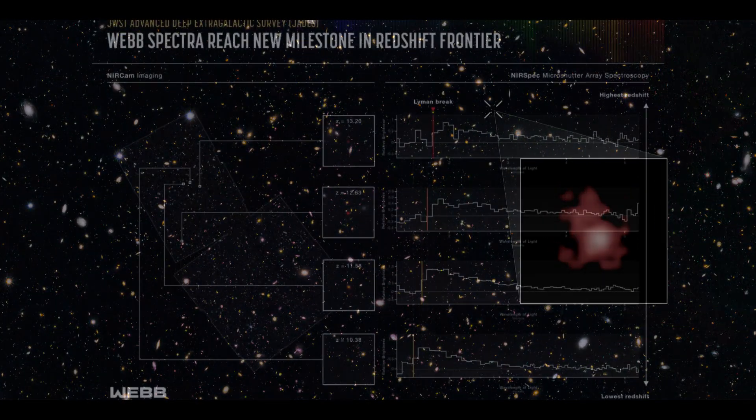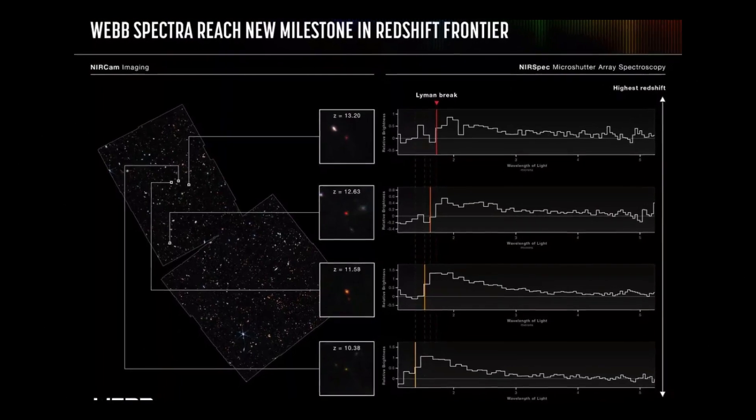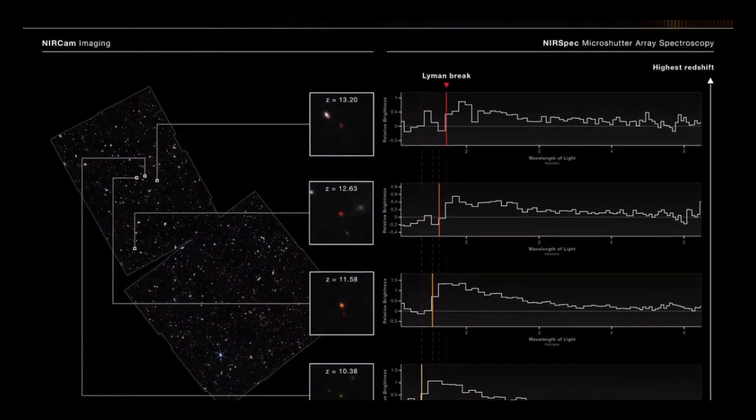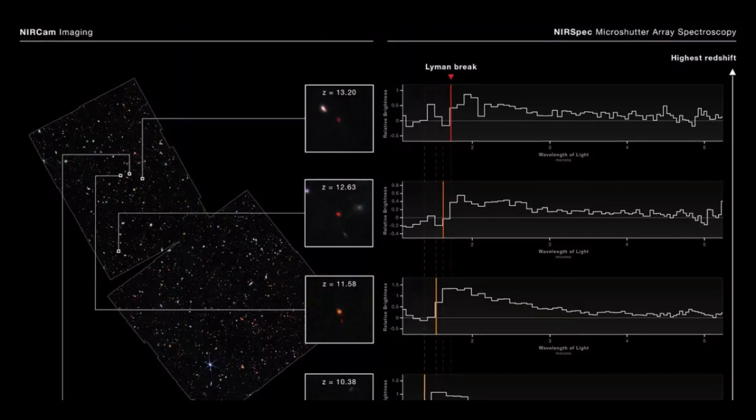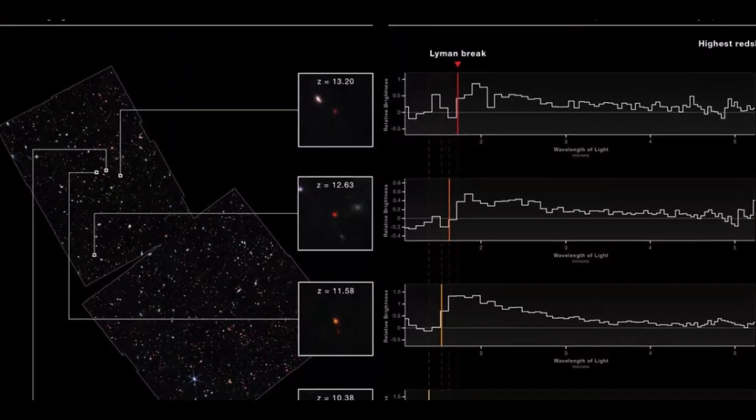The result validates JWST's capacity to carry out one of its most critical tasks, researching the early cosmos using light that has traveled for so long that the universe's expansion has extended its wavelength. This stretching of light is referred to as redshift.